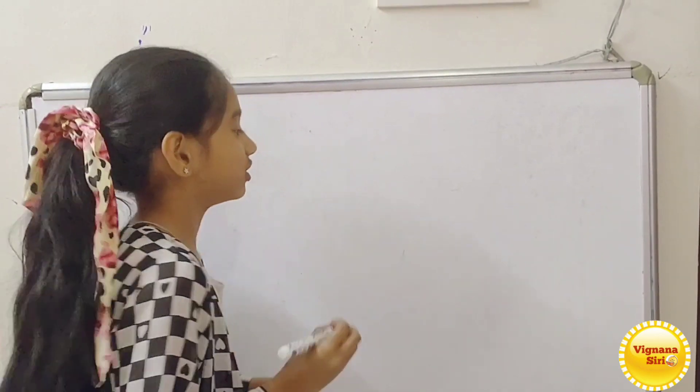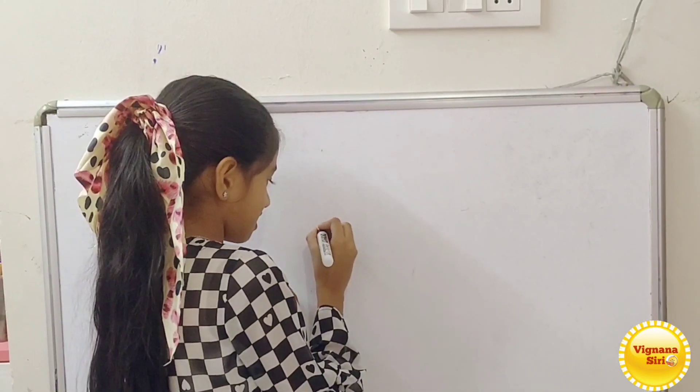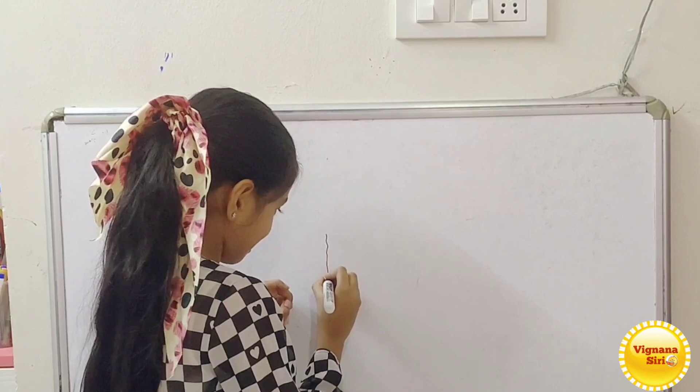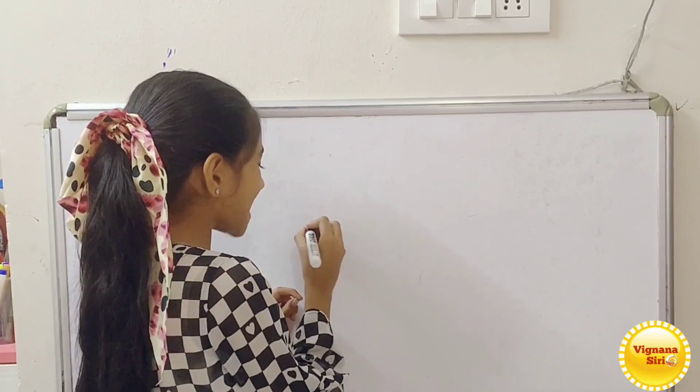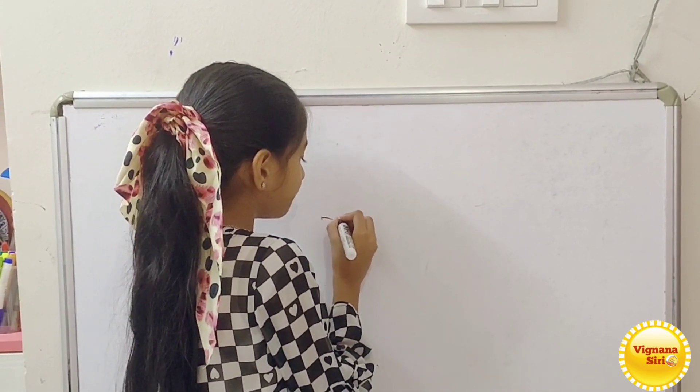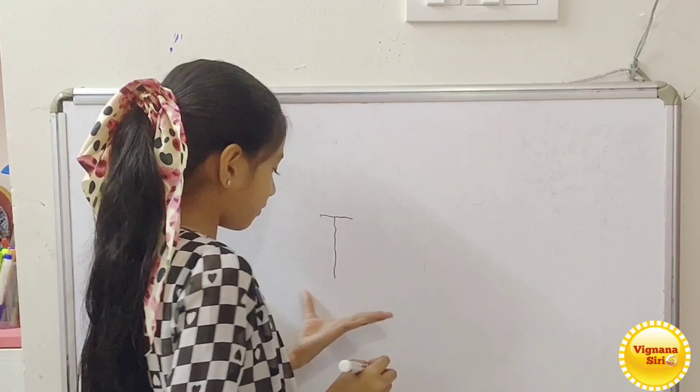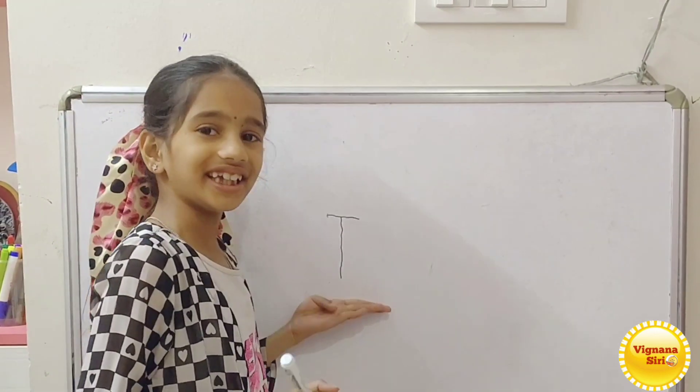I will show how to write on the whiteboard. First, you should write a standing line. Above the standing line, you should write a sleeping line. Finished! Chapter letter T.